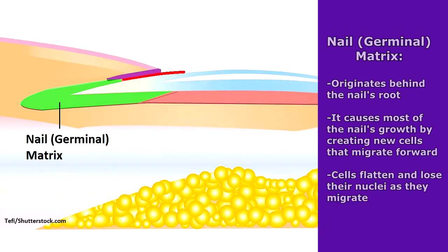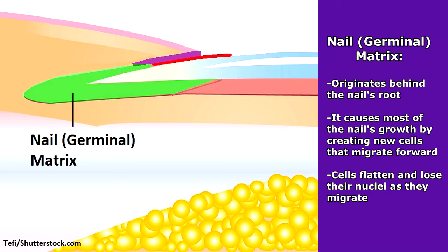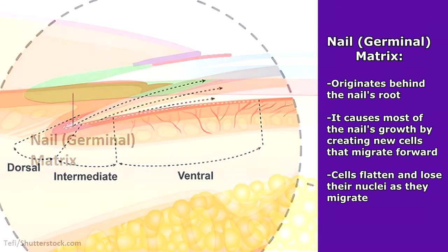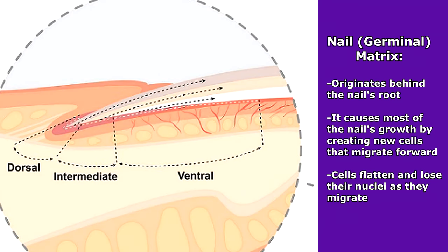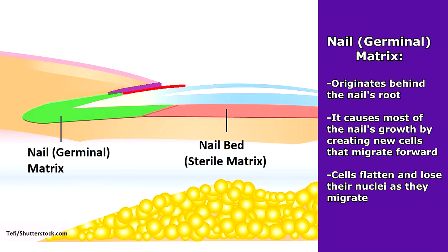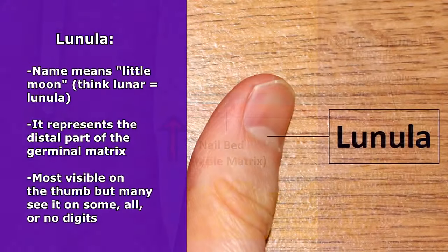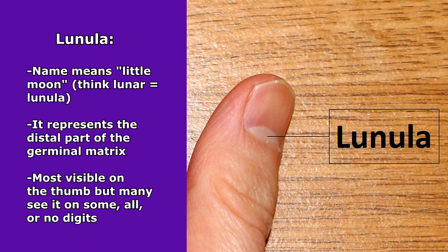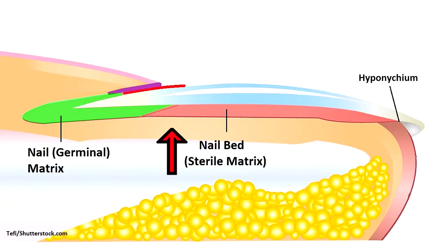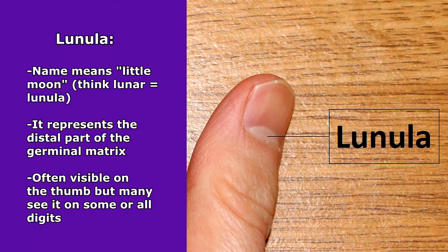Now let's take a look at some of the underlying tissues that help create and support the nail plate. The germinal matrix is under the skin and it originates behind, or proximal to, the root of the nail. The nail matrix causes most of the nail's growth by creating new cells that continually migrate forward, and eventually they flatten out and lose their nuclei. This matrix can extend all the way to the proximal part of the nail body and is sometimes visible as the lunula.